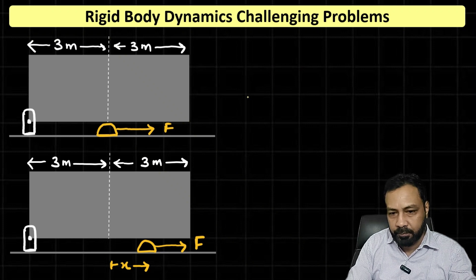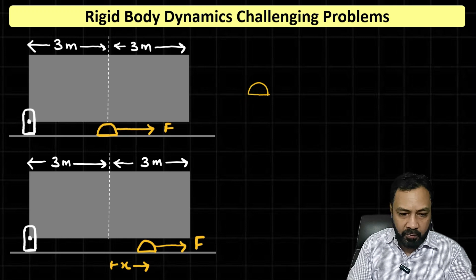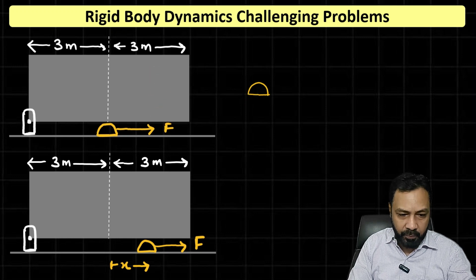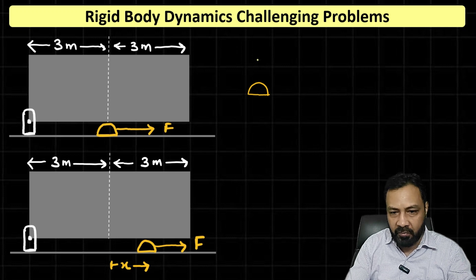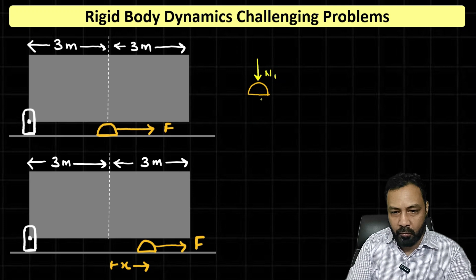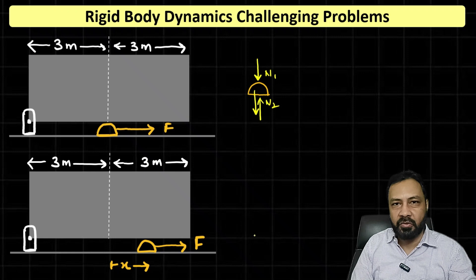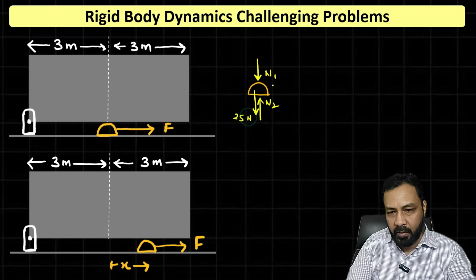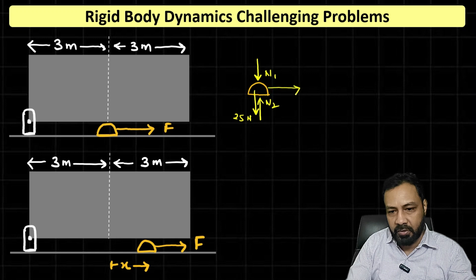Let me draw the FBD here. First of all, there will be a normal from this bigger block, say that normal is N1. Normal from the floor, say that is N2. Its own weight, mass is 2.5 kg, so directly writing, weight is 25 Newtons.